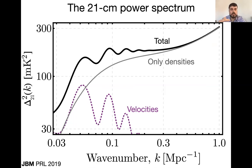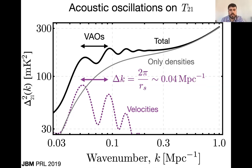The fact that VAOs contain acoustic physics means there's at least one number we understand at redshift 20 — the sound horizon R_s. So we can use it as a standard ruler to measure the size of the universe. The VAOs have the same sound horizon as the BAO, but they are due to velocities instead of densities. We can use this to measure the expansion history at cosmic dawn.